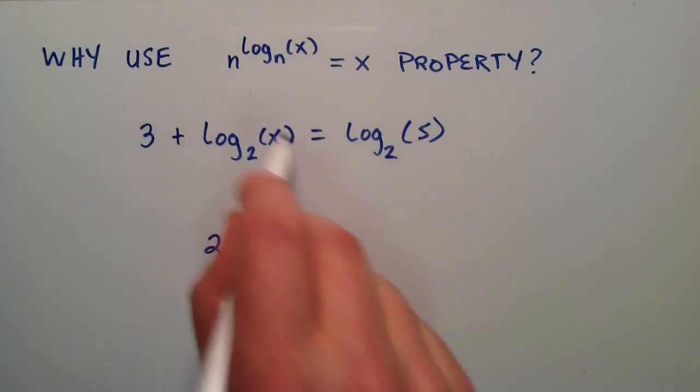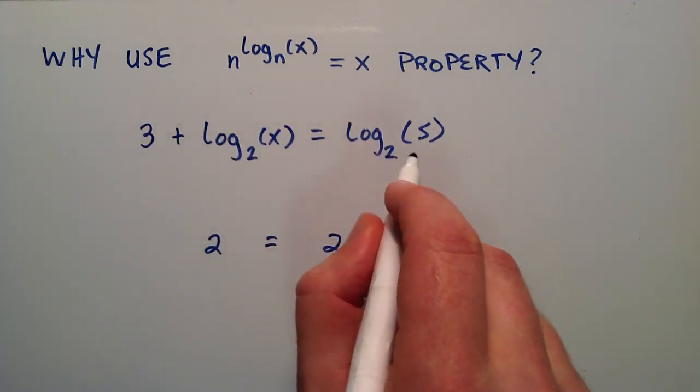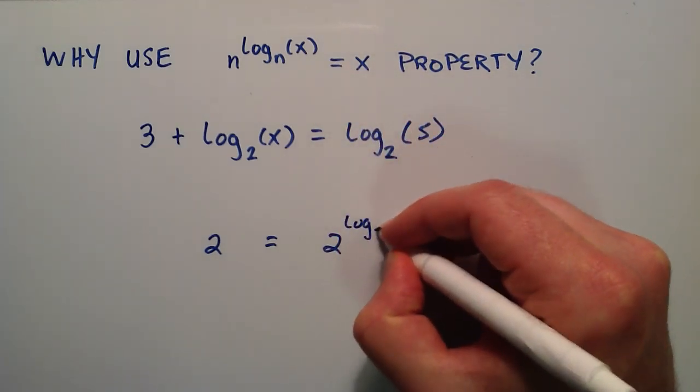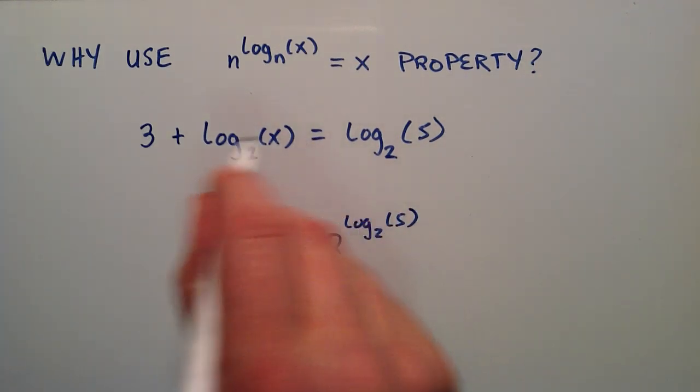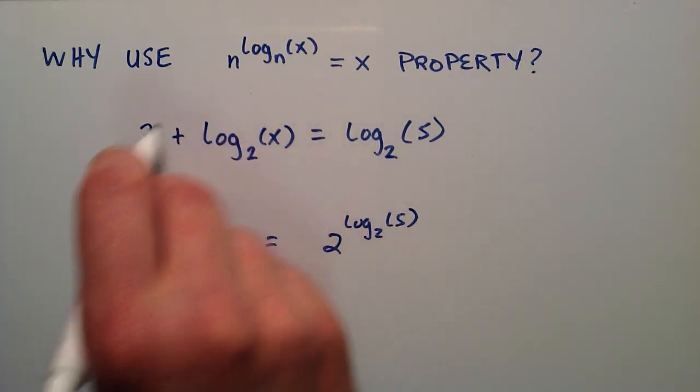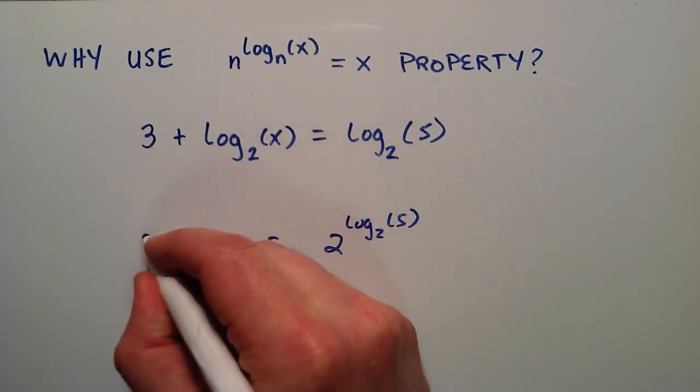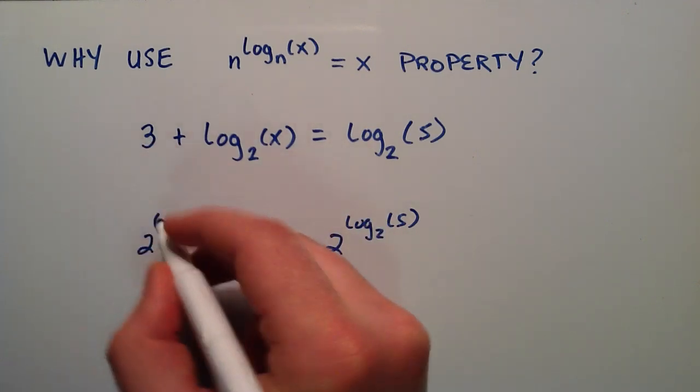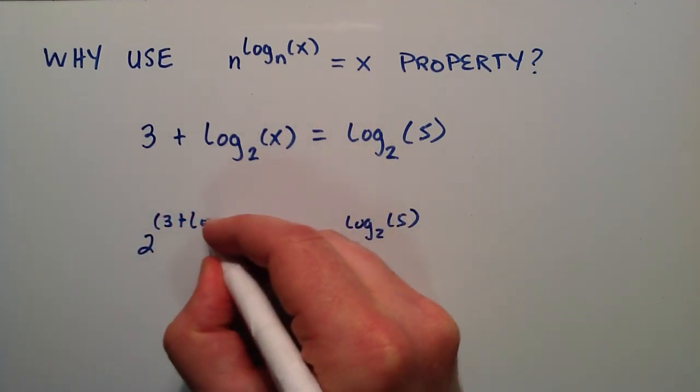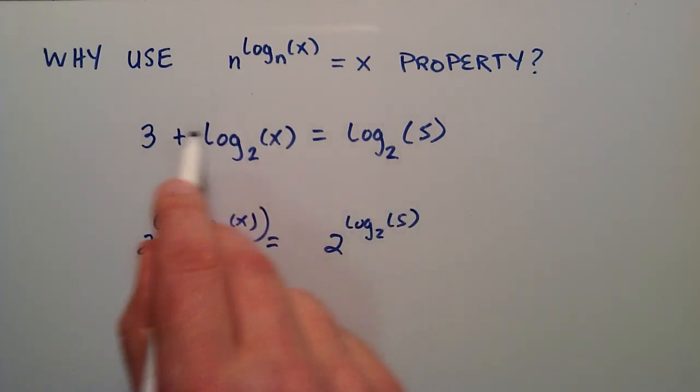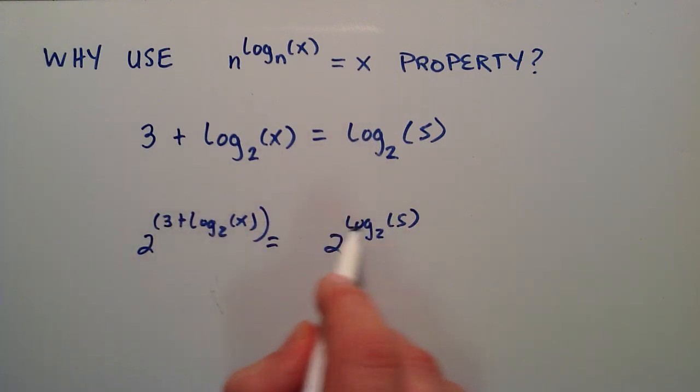And we already said that this equals this over here. So that means that 2 raised to this power log base 2 of 5 is also equal to 2 raised to all of this stuff, since we said this stuff equals that stuff. So this would be 2 to the 3 + log base 2 of x. So since this equals this, we've got the same power here, and then 2 equals 2, so we have the same base raised to the same power.